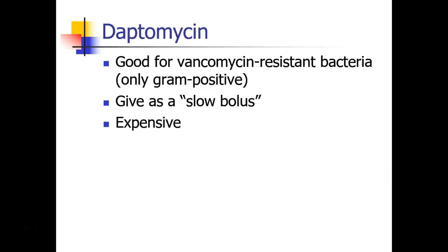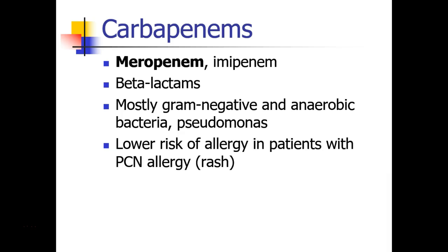Finally, to round out the discussion, we have daptomycin, which is good for vancomycin-resistant bacteria. It is only effective against gram-positive bacteria, and I usually give it as a slow bolus — it is an expensive drug, but it is out there. Carbapenems, which include meropenem and imipenem, are also beta-lactam medications. They are effective mostly against gram-negative bacteria, as well as some anaerobic and pseudomonas bacteria, and they have a lower risk of allergy in patients who have a penicillin allergy, especially if the reaction is just a rash.